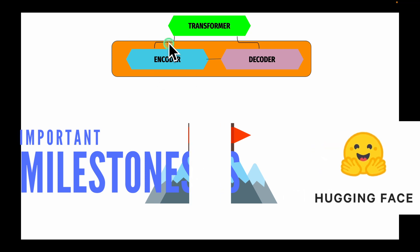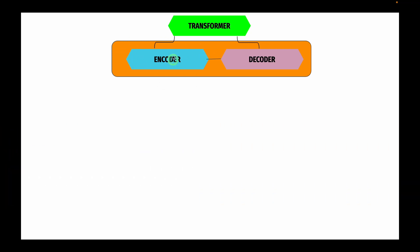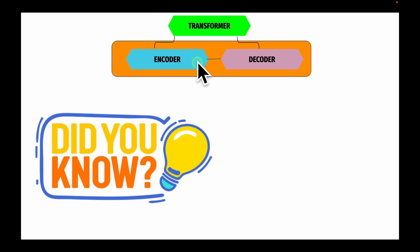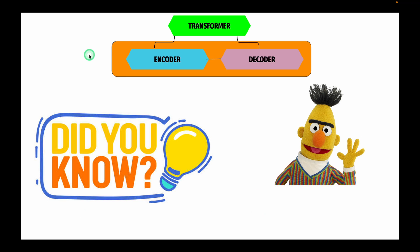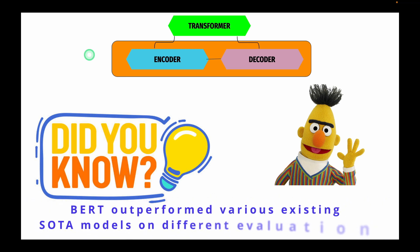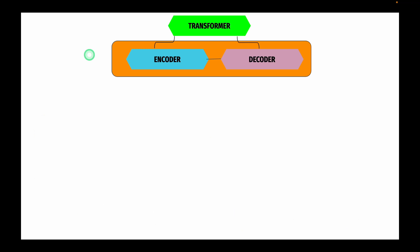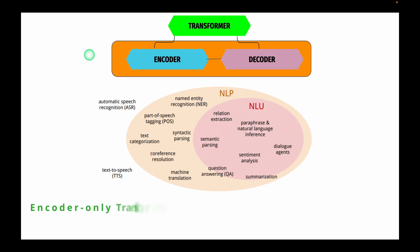Let's start with the encoder branch. The first encoder model based only on transformers was BERT. When the BERT paper was published, it outperformed various existing state-of-the-art models on different evaluation metrics like BLEU. Various NLU or natural language understanding challenges like text classification, named entity recognition, etc. can be solved using encoder-only models.